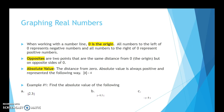The first term is the origin, which is 0. Notice the highlighting here. All numbers to the left of 0, which is the origin, represent negative numbers. And all numbers to the right of 0 represent positive numbers.